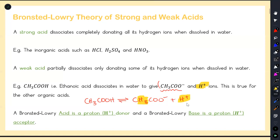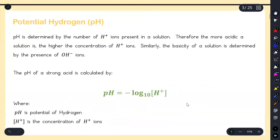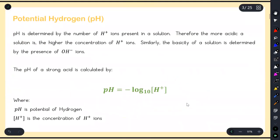In terms of Bronsted-Lowry theory, you should be able to define what an acid and a base are. A Bronsted-Lowry acid is a proton donor - a compound that gives away a hydrogen ion. A Bronsted-Lowry base is a compound that accepts the donated H⁺ ion, also called a proton. That's the key terminology we'll be using throughout this session.